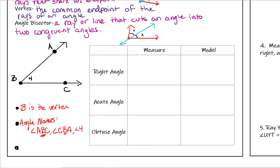The sides of an angle are the two rays used to create it. Our two rays here are ray BA going from B to A, and ray BC.